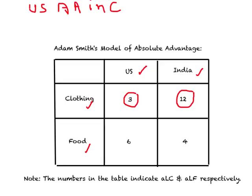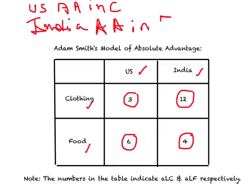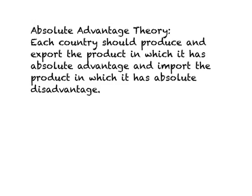The US has an absolute advantage in clothing because it requires less labor time to produce clothing relative to India. Looking at food: in the US you require six hours of labor time to produce one unit of food, while in India you can produce the same amount using four hours. So India has an absolute advantage in production of food. Equivalently, India has an absolute disadvantage in clothing and the US has an absolute disadvantage in food.